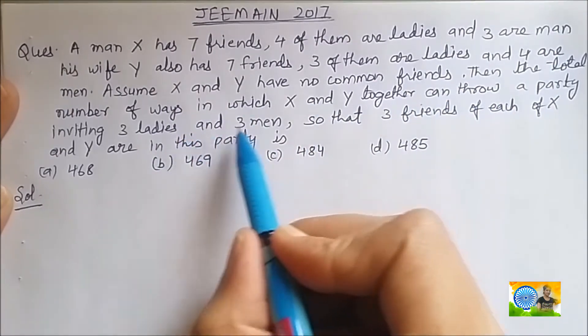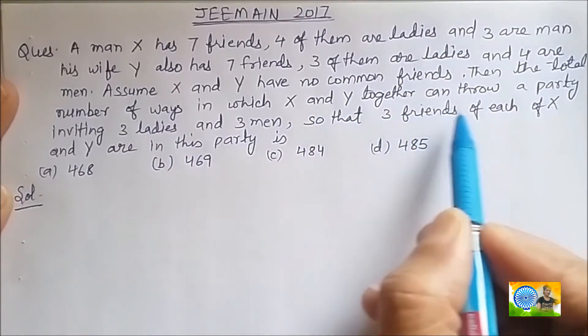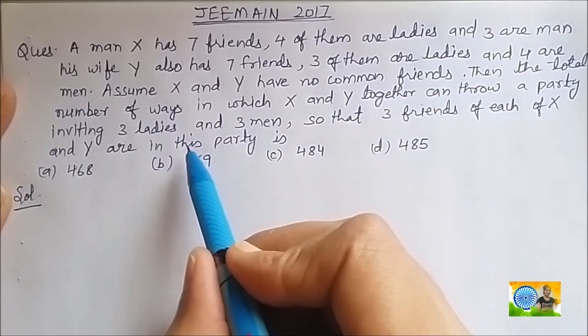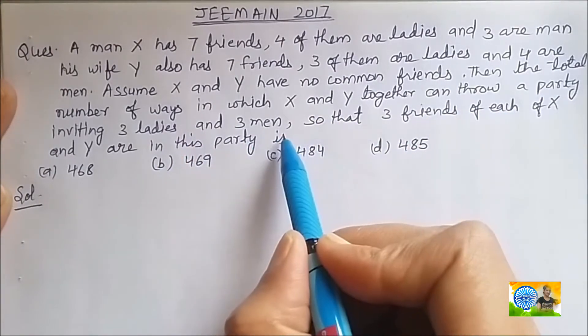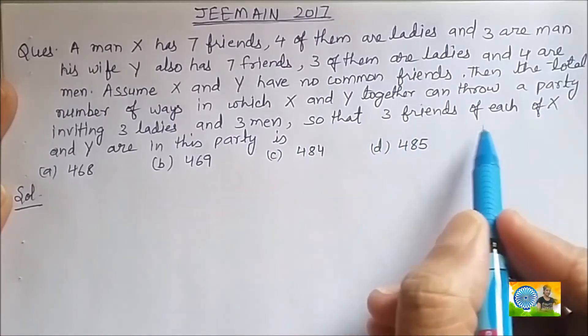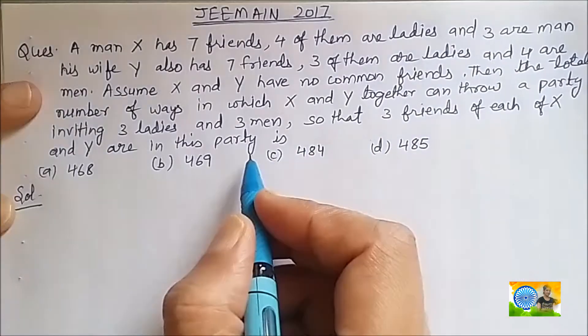Find the total number of ways in which X and Y together can throw a party inviting 3 ladies and 3 men, such that 3 friends of each of X and Y are in this party.